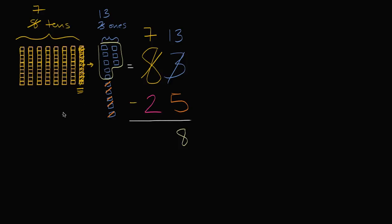And then we go to the 10s place. We have seven 10s. We're going to take away two of the 10s. So we'll take away one and we'll take away two.